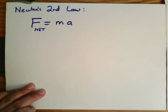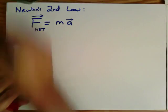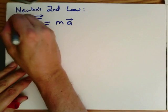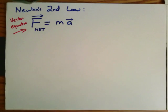And this is a vector equation, which is to say that the quantities on both sides of the equal sign are vectors. So when I talk about a vector, I mean a quantity that has both a magnitude and a direction.